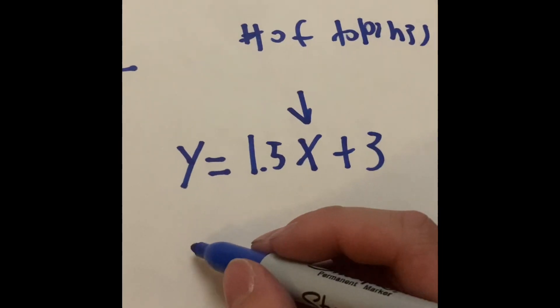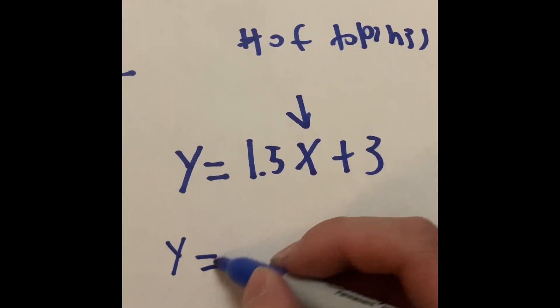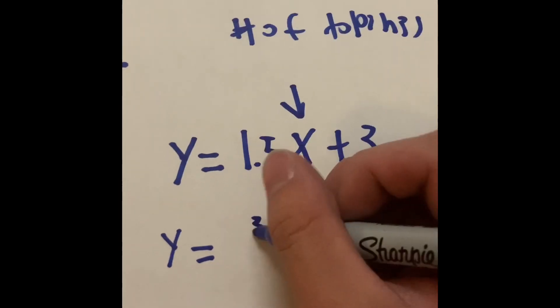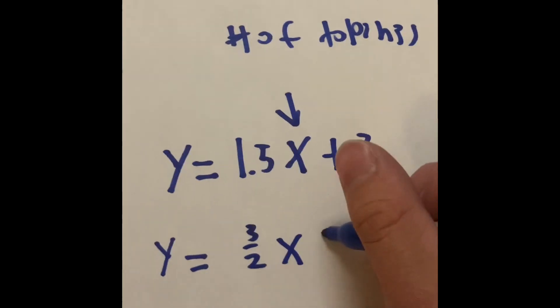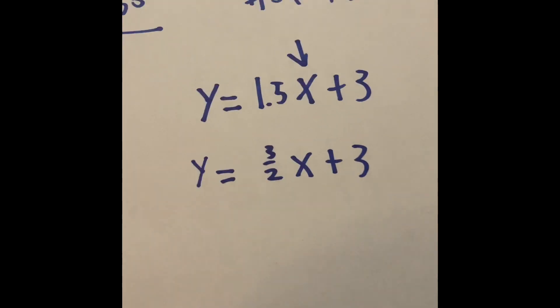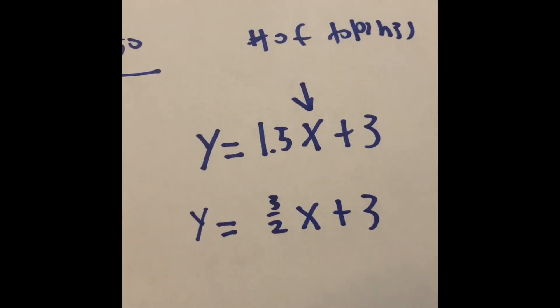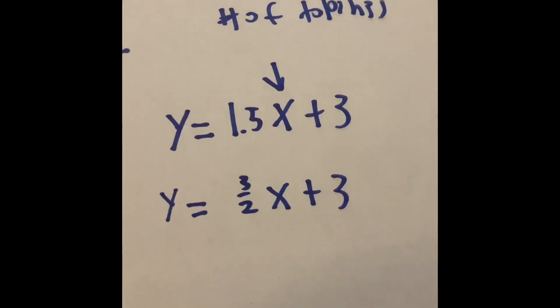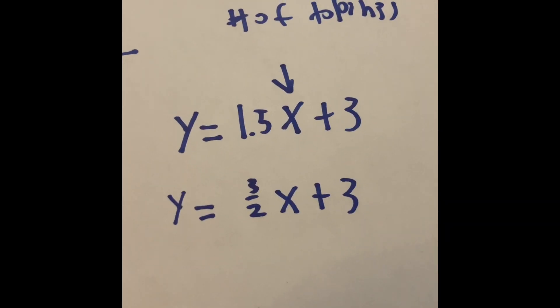If you want a different idea, instead of a decimal, y equals 3 over 2x plus 3. That is another way we can rewrite the equation, but in the same format. So, that is going to be our equation.